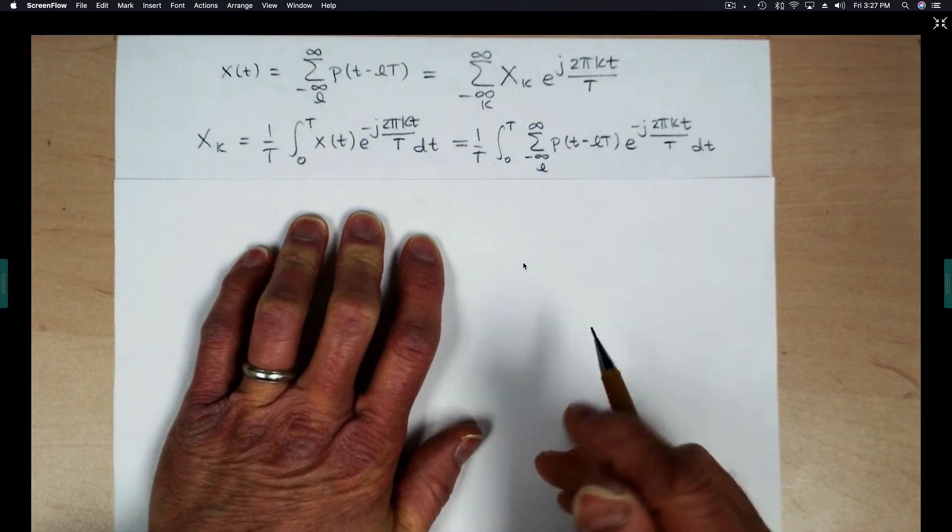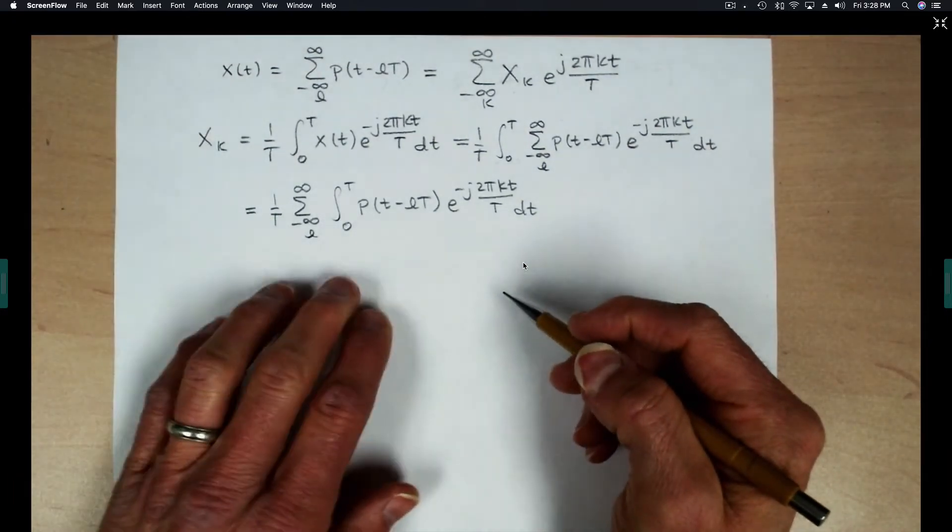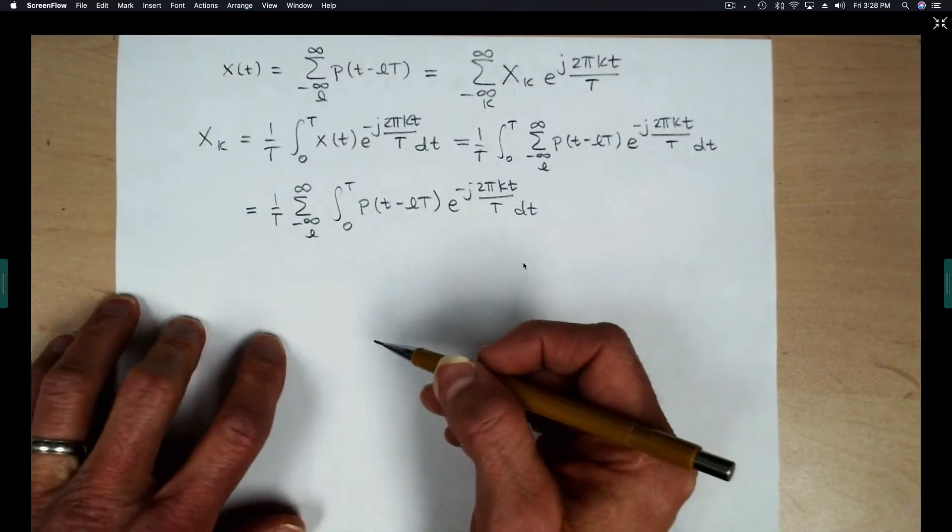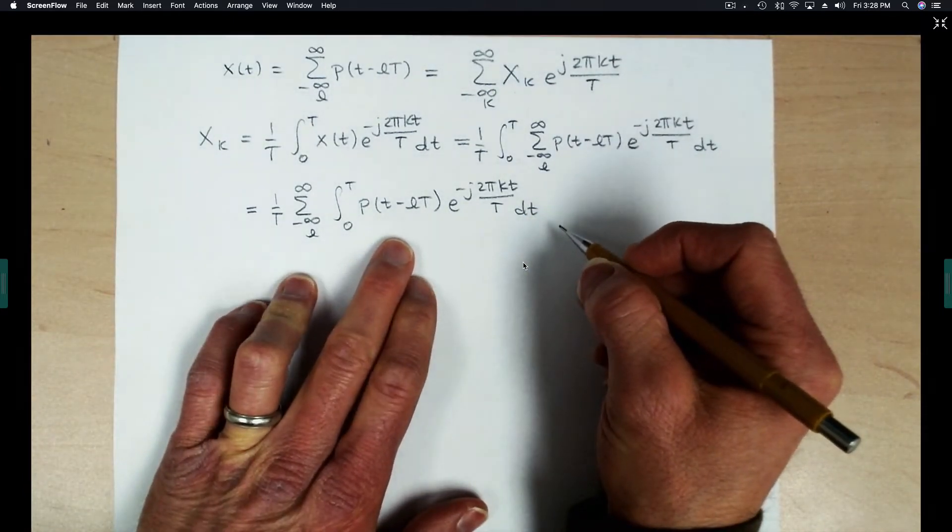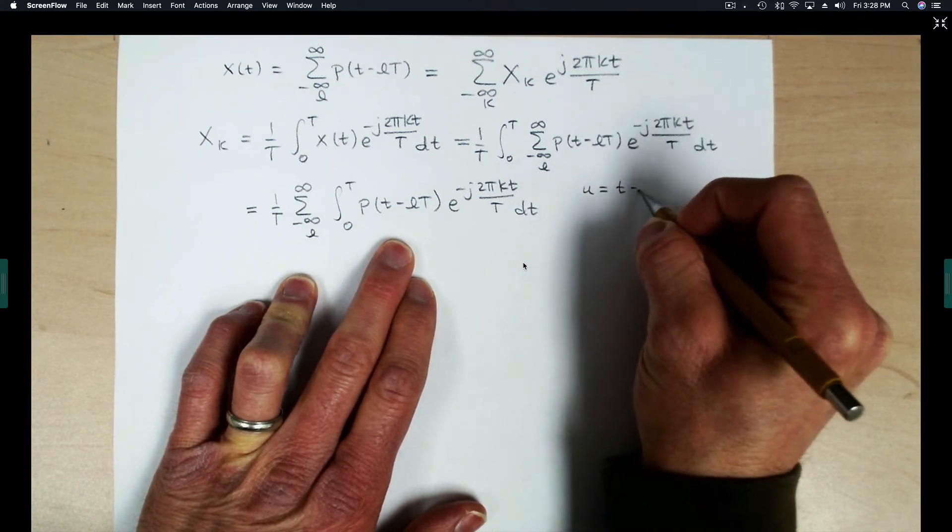On the next line, I've taken another step, which is to reorder the integration and summation. And now I'm going to do a change of variables by letting U equal T minus LT.